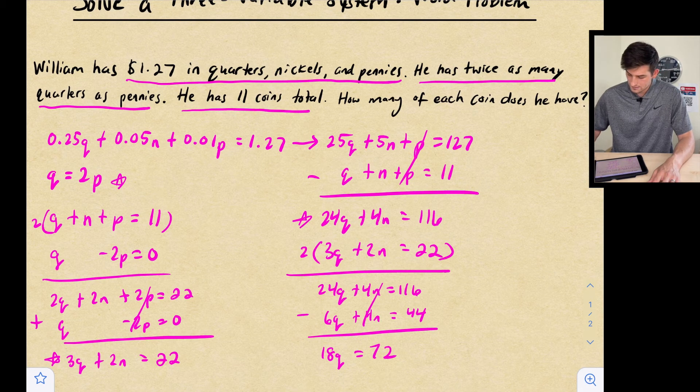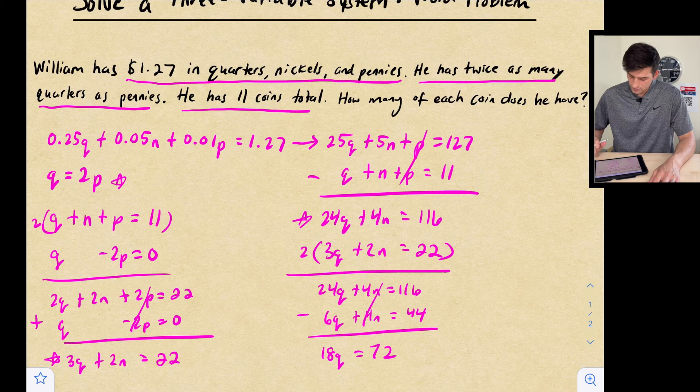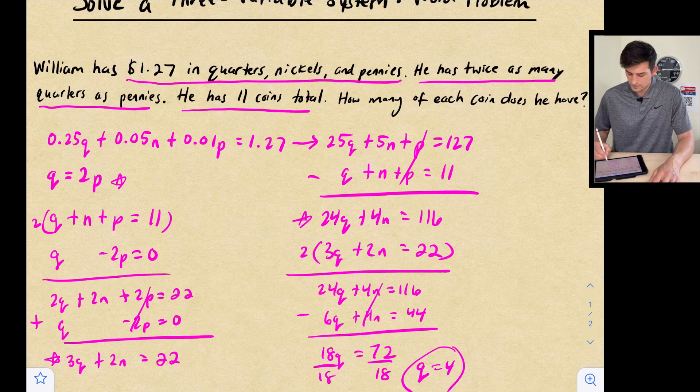116 minus 44. Good. Now we divide both sides by 18 and we get Q is equal to 4, which means we have 4 quarters.